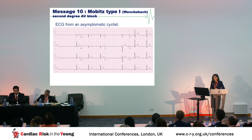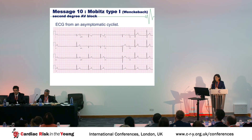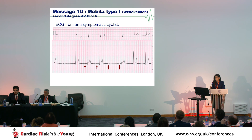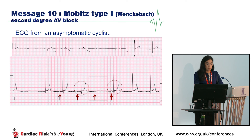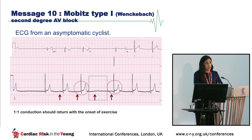Message ten: Mobitz type 1 Wenckebach block. This is an ECG of an asymptomatic cyclist demonstrating progressive prolongation of the PR interval followed by a non-conducted P wave with no QRS complex, with the subsequent PR interval being shorter than the one before the dropped beat. This reflects a higher degree of AV nodal conduction disturbance compared to first degree AV block, and is often seen in highly trained endurance athletes. One-to-one conduction should return with the onset of exercise.